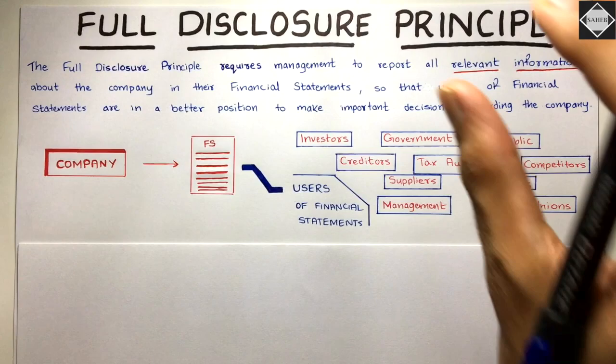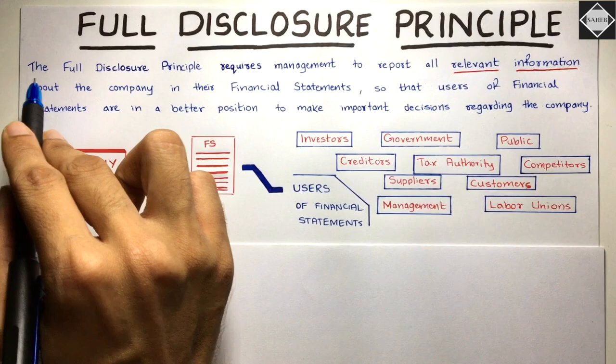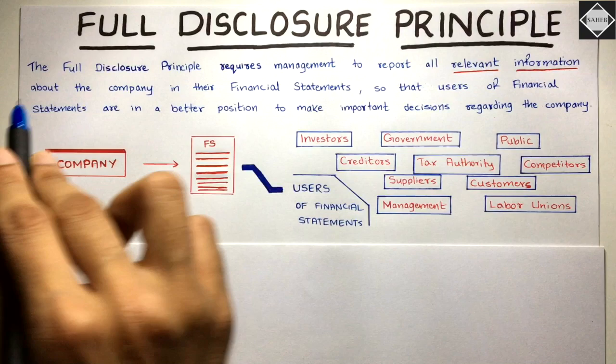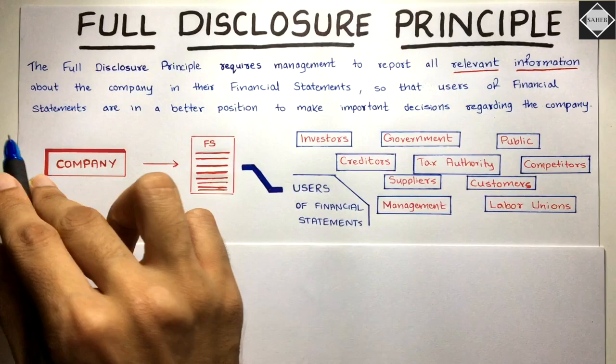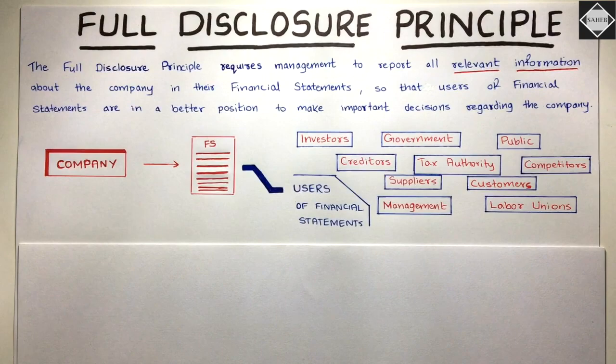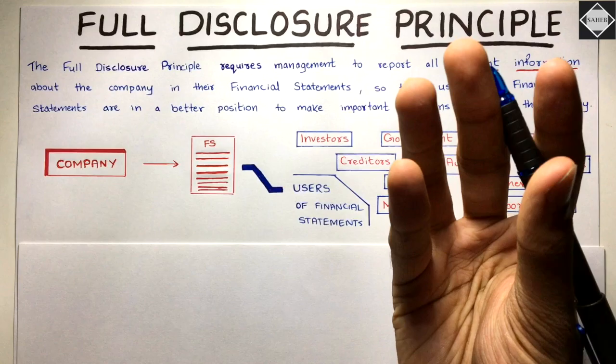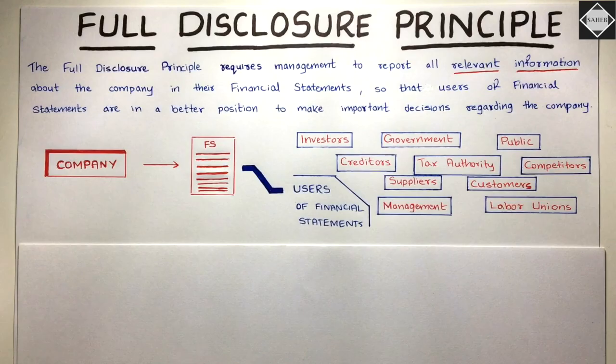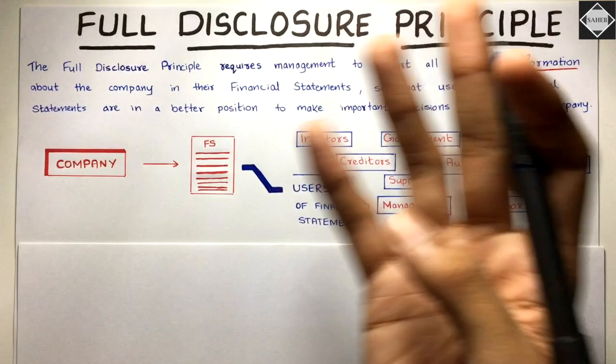Let's precisely and logically understand what this principle is trying to tell us. The full disclosure principle requires management to report all relevant information about the company in their financial statements, so that users of financial statements are in a better position to make important decisions regarding the company. All relevant information has to be fully disclosed in the financial statements.